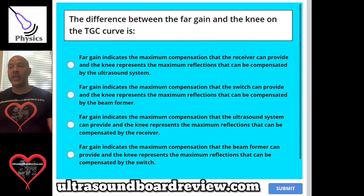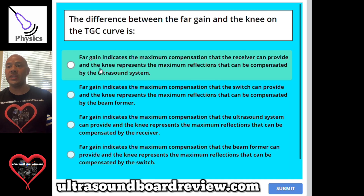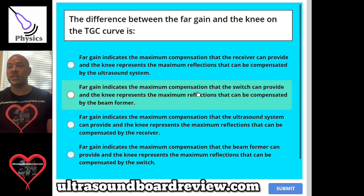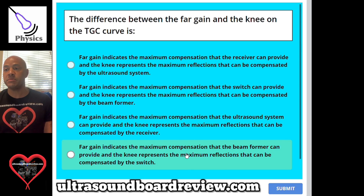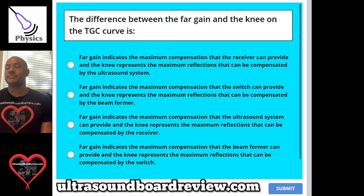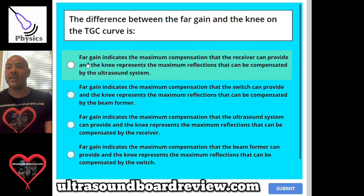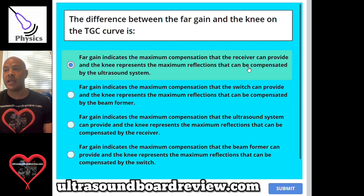Question 75: The difference between the far gain and the knee on the TGC curve — A, far gain indicates the maximum compensation that the receiver can provide, and the knee represents the maximum reflections that can be compensated by the ultrasound system; B, far gain is for the switch, knee for the beam former; C, far gain is for the ultrasound system, knee for the receiver; or D, far gain for the beam former, knee for the switch. The answer is A: far gain indicates the maximum compensation the receiver can provide, and the knee represents the maximum reflections compensated by the ultrasound system.